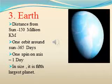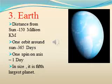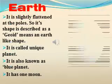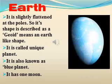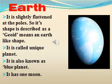The Earth is the third-nearest planet to the Sun, and in size it is the fifth-largest planet. Its distance from the Sun is 150 million km. One orbit around the Sun is 365 days. One spin on axis is one day. The Earth is slightly flattened at the poles, so its shape is described as a geoid — meaning an Earth-like shape. Conditions favorable to support life are probably found only on the Earth. It is neither too hot nor too cold, and has water and air with life-supporting gases like oxygen. Because of these reasons, the Earth is a unique planet in the Solar System.